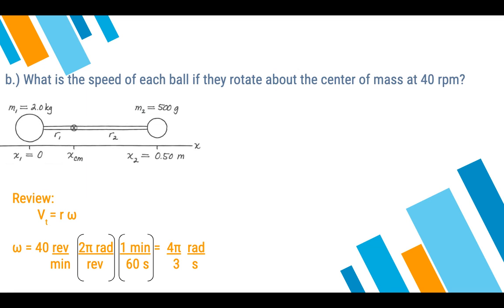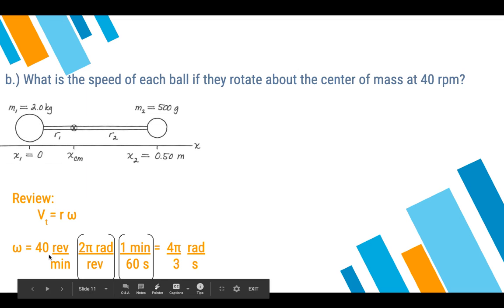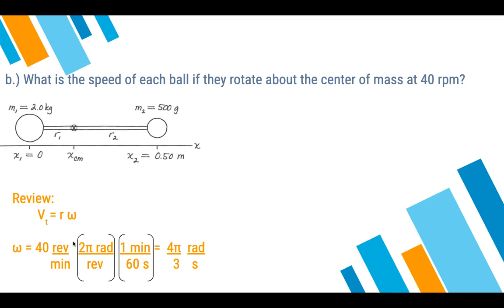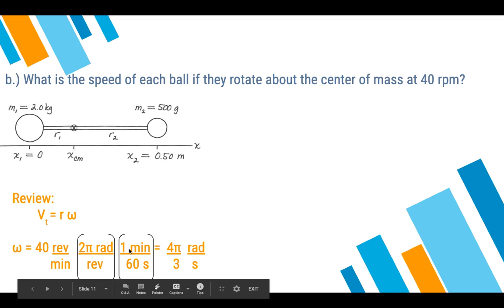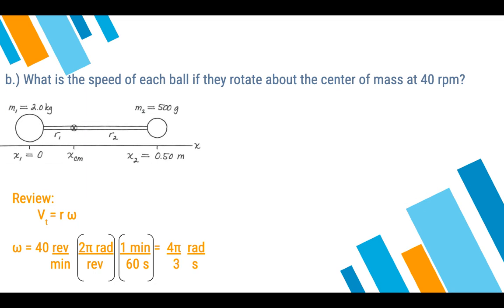So we'll take 40 revolutions per minute, multiply by 2 pi radians per revolution. Our revolutions will cancel out. We need seconds, radians per second. So we're going to take minutes in our denominator. We need minutes in the numerator for them to cancel. We have one minute over 60 seconds. So we take 40 times 2 pi divided by 60. We get 4 thirds pi radians per second. You can leave that as a decimal instead. It doesn't technically matter here. In pre-calc or calc, your teacher will tell you to leave it in terms of pi. In physics, we're not as particular. Either way works.